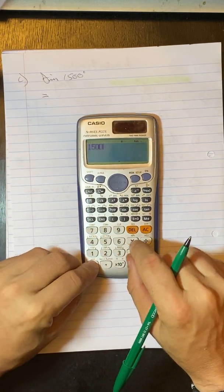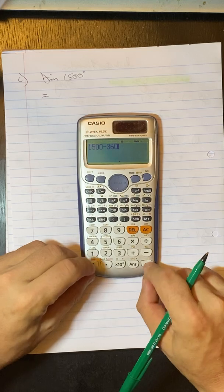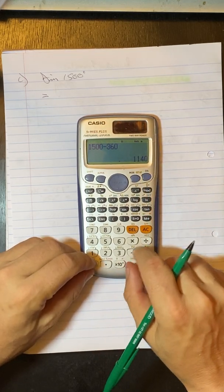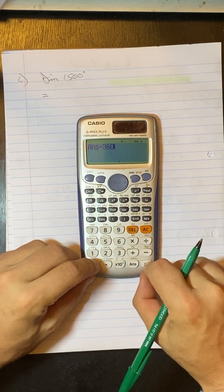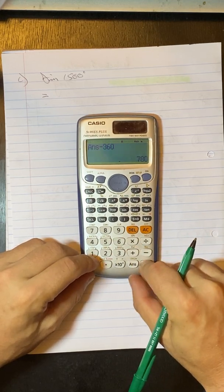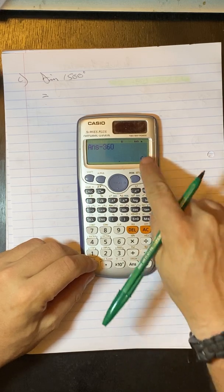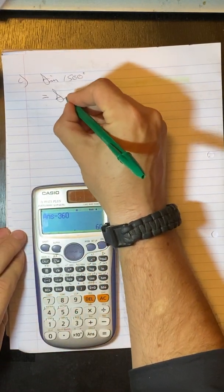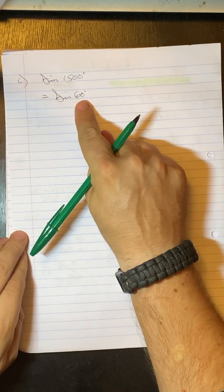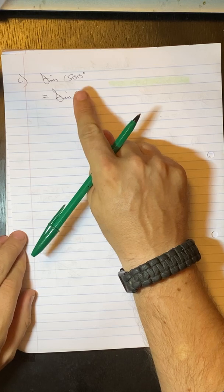So I take the 1,500, subtract 360. Still much bigger than 360. So subtract. I take that. Subtract 360. I do it again and again. Now I've got an angle that's between 0 and 360. So we've got sine of 60. Now, I don't have to reduce this because it's already acute.